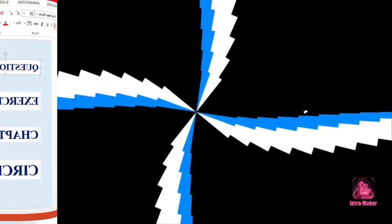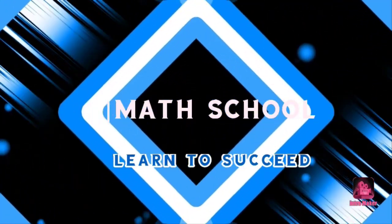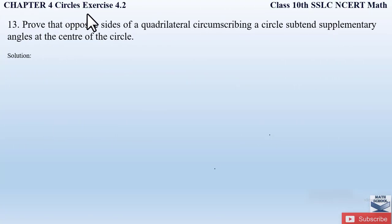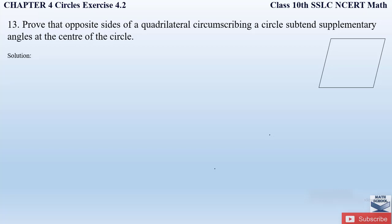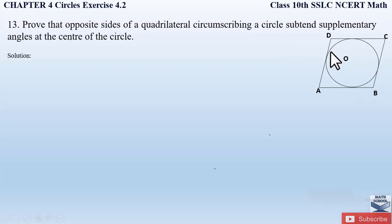Now let us begin with the video. Question number 13 from exercise 4.2, chapter 4 circles says: prove that opposite sides of a quadrilateral circumscribing a circle subtend supplementary angles at the center of the circle. Here we have to understand the question and draw the figure since the figure is not given. Let us draw a quadrilateral and name it ABCD. This quadrilateral is circumscribing a circle, so let us draw a circle inside with center O. The circle touches the quadrilateral at points P, Q, R, and S.